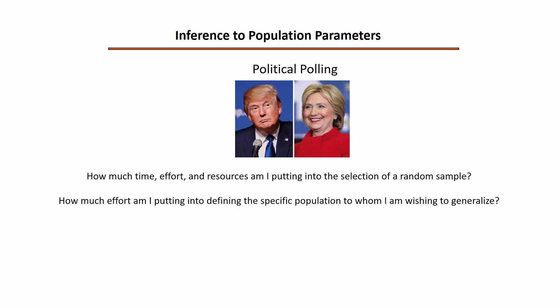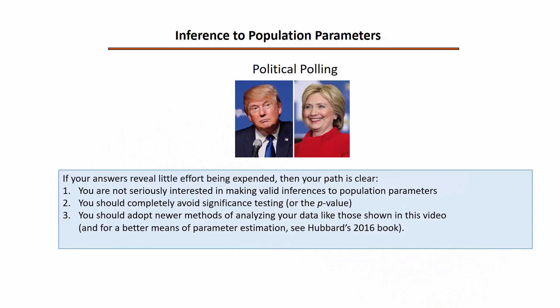The questions to consider as part of this quasi-litmus test are: one, how much time, effort, and resources am I putting into the selection of a random sample? And two, how much effort am I putting into defining the specific population to whom I am wishing to generalize? If you are like most social scientists who study undergraduate volunteers from a participant pool, you are not putting any effort into drawing a random sample from a specified population. Consequently, you are not seriously interested in making valid inferences to population parameters, you should completely avoid significance testing or the p-value, and you should adopt newer methods of analyzing your data like those shown in this video.